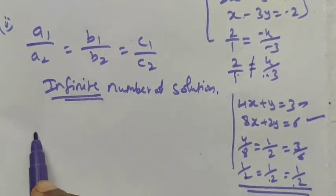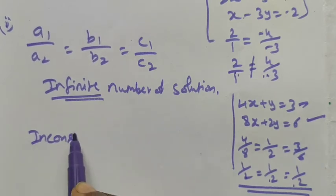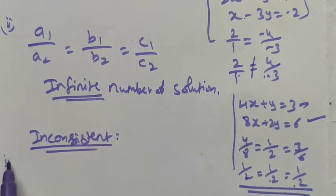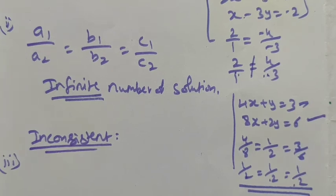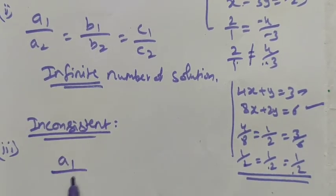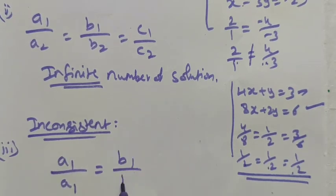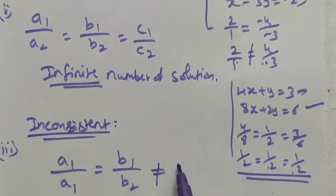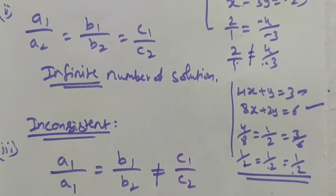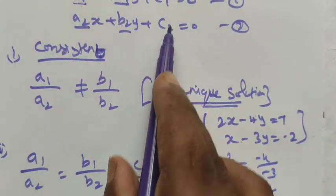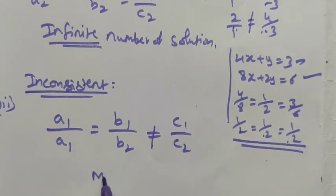The third condition is inconsistency. Inconsistency means we have no solution. In the algebraic method, this occurs when the ratio of the coefficient of x equals the ratio of the coefficient of y, but the ratio of the constant term is not equal. If a1/a2 = b1/b2 ≠ c1/c2, we have no solution.